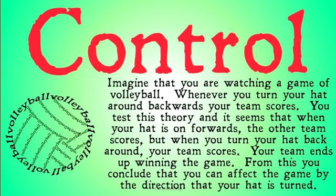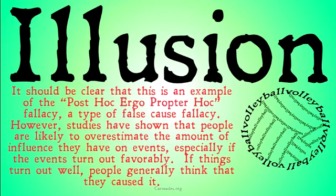Imagine you're watching a game of volleyball. Whenever you turn your hat around backwards, your team scores. You test this theory by turning your hat forwards and backwards, and it seems that when your hat is on forwards, the other team scores, but when your hat is turned around backwards, your team scores. Your team ends up winning the game. From this you conclude that you can affect the game by the direction your hat is turned. This is an example of the post hoc ergo propter hoc fallacy, a type of false cause fallacy.